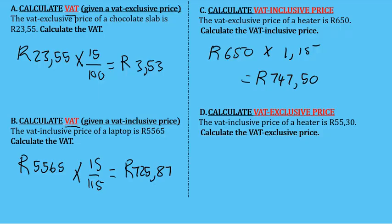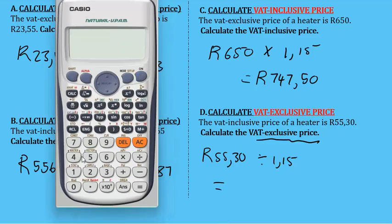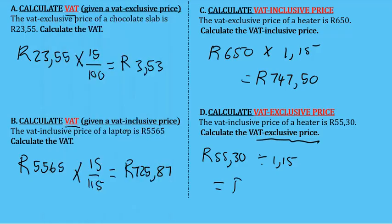Now we do the opposite of multiplication if we want the VAT exclusive price — we want to remove VAT from the price. If the price is R55.30 and we want to calculate the VAT exclusive price, we divide by 1.15, which is just the opposite of multiplying by 1.15 to include VAT. The result is R48.09, so we have removed the VAT from the price.